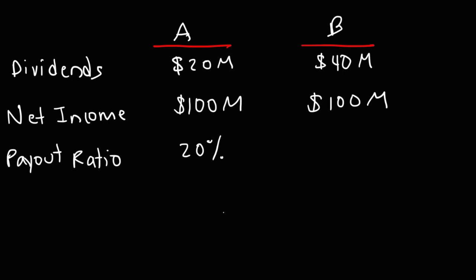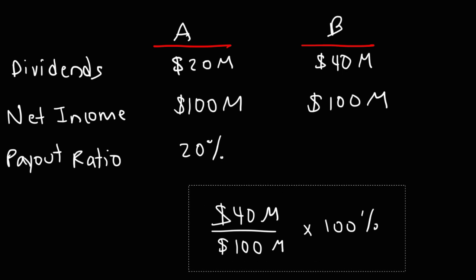For company B, it's going to be the dividends of 40 million divided by the net income of 100 million times 100% to express it as a percentage. So, that's 40%.